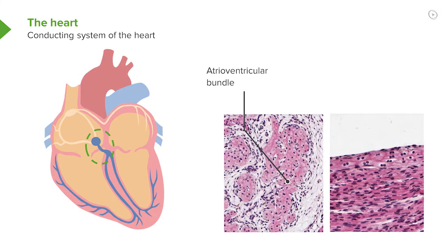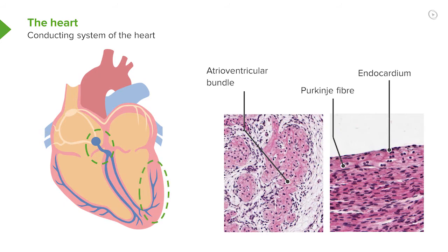In the middle section labelled is the atrio-ventricular bundle. It's embedded with connective tissue. It's cardiac muscle cell, and on the right-hand side, you can see the endocardium, and directly under the endocardium, if you look very carefully, often you find evidence of these conducting fibres called Purkinje fibres.